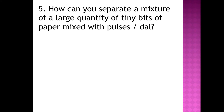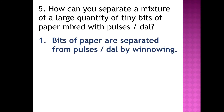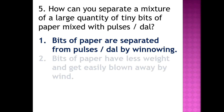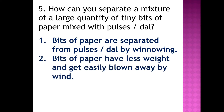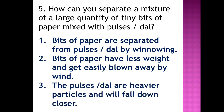Fifth question: how can you separate a mixture of a large quantity of tiny bits of paper mixed with pulses or dal? Bits of paper are separated from pulses or dal by winnowing. Bits of paper have less weight and get easily blown away by wind. The pulses or dal are heavier particles and will fall down closer.